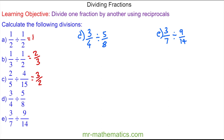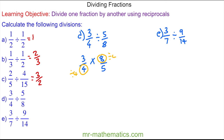For question d, we change the divide to times and find the reciprocal of five eighths, which is eight over five. So we have three quarters multiplied by eight over five. We can cross simplify by dividing both four and eight by four, giving us three over one multiplied by two over five, which is six fifths.